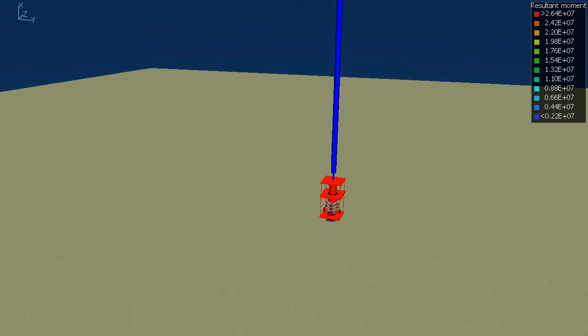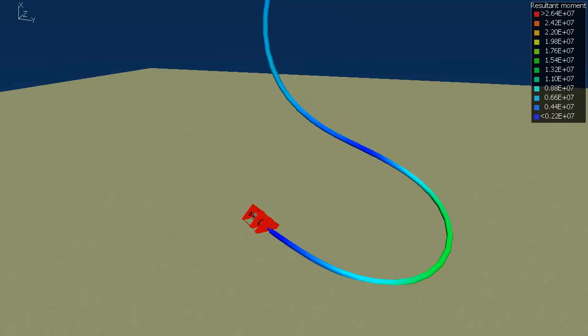It contacts the seabed. You can see the BOP is bouncing off the seabed, and you can look at the violent response of the riser there. I've highlighted the bending moments as well, as you can see, and it gradually settles down.